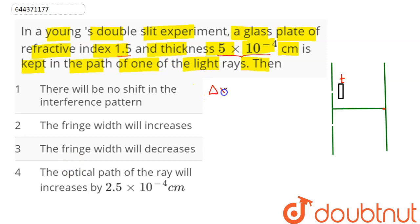Here, we can say, the shifting occurs in this case with the optical path of the ray increasing by mu T minus T, that is T into mu minus 1.